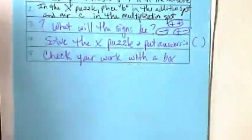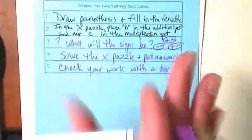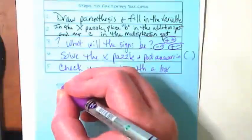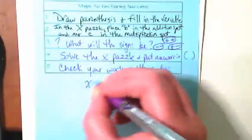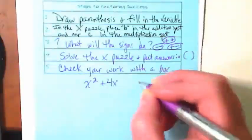Let's write an example down here. I'm going to try to make this all in the site at the same time. Let's do x squared plus 4x plus 3.